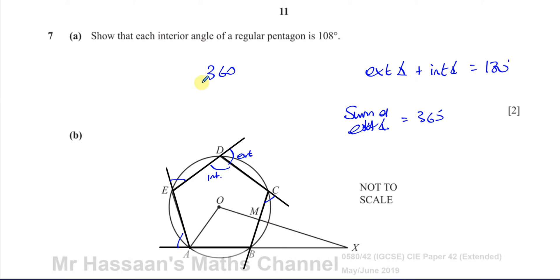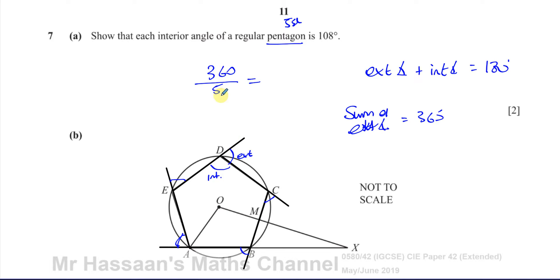So it's easy for us to find the size of each exterior angle — it's just 360 divided by the number of sides. The number of angles is the same as the number of sides. For a pentagon, which has five sides, 360 divided by five gives the size of each exterior angle in a regular polygon, since all exterior angles are equal to each other.